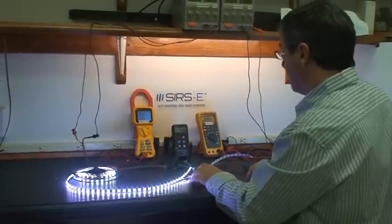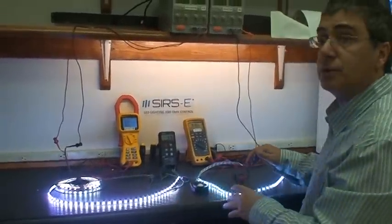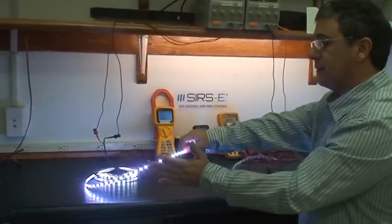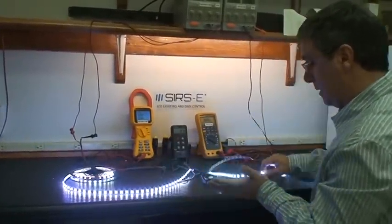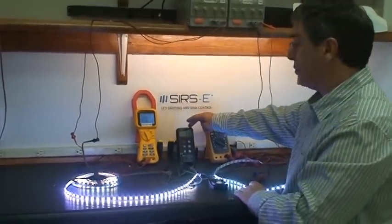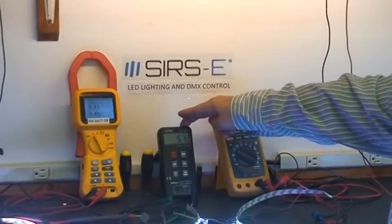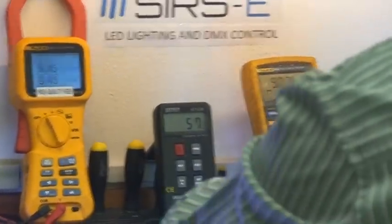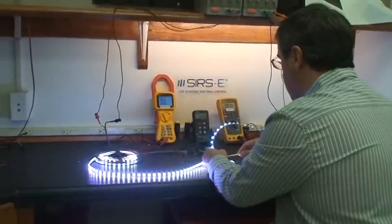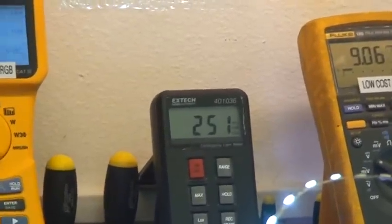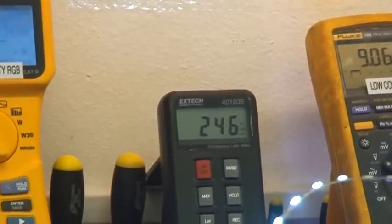Now the next test that I prepared for you is to compare the light output. This one delivered a lot more light than this one. We have a photometer here set up to lux times 10. We will test this one at this distance, it's 2,500 lux.